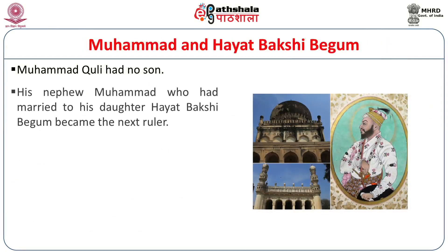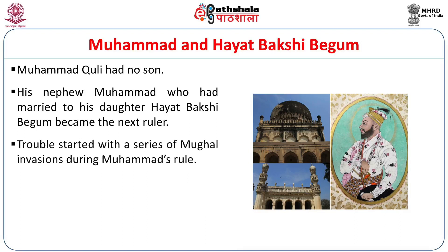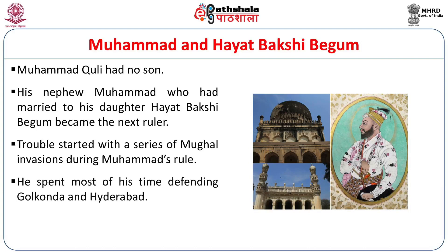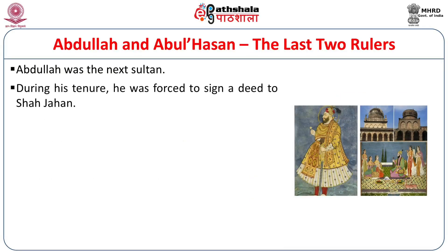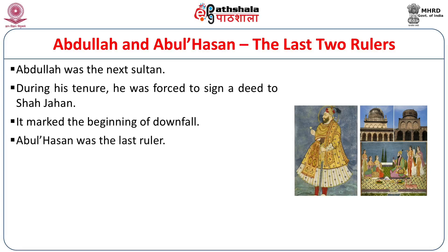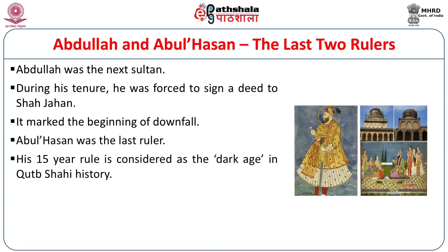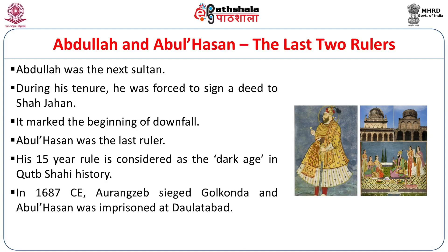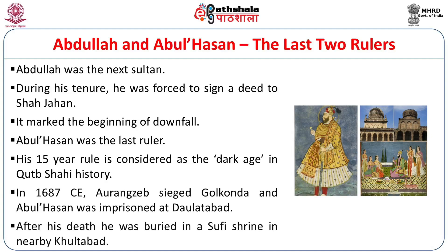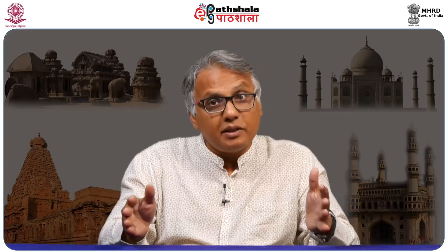Muhammad Quli had no son. His nephew Muhammad, who had married his daughter Hayat Bakshi Begum, became the next ruler. During Muhammad's rule there was trouble from Mughal invasions, and he mostly spent time defending Golconda and Hyderabad. Abdullah was the next Sultan, and during his tenure he was forced to sign a treaty with Shahjahan — the beginning of the downfall of the Qutub Shahi dynasty. Abdul Hassan was the last ruler, and his 15-year rule is considered the dark age in Qutub Shahi history. In 1687 Aurangzeb seized Golconda, and Abdul Hassan was imprisoned at Dolatabad.